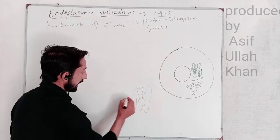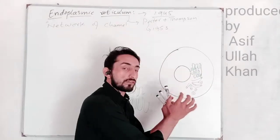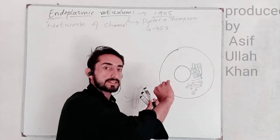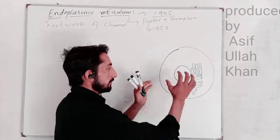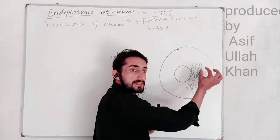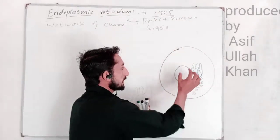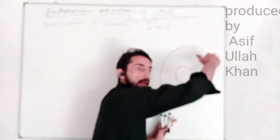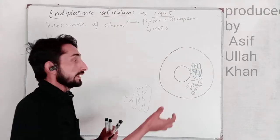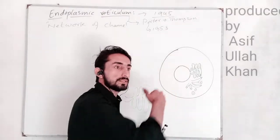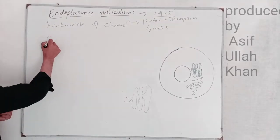This network of channels expands from the nucleus — sometimes expanding to the cell membrane. So it starts from the nucleus and can extend all the way out to the cell membrane. Let's see the structure of this endoplasmic reticulum.